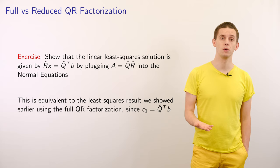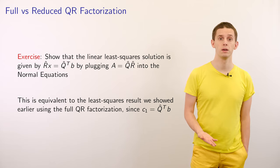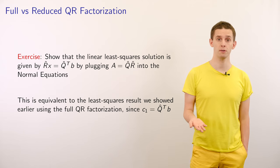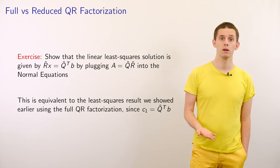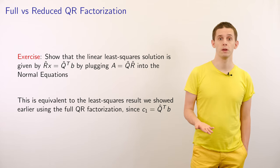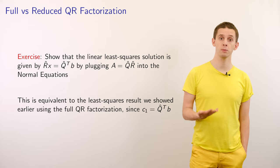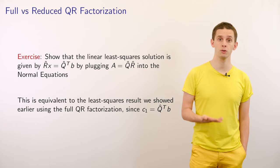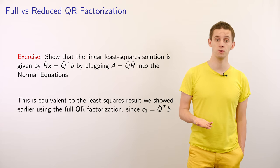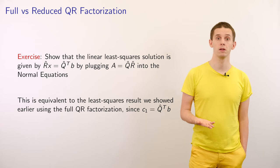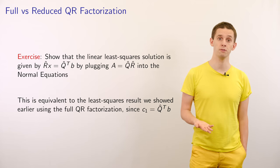In the previous video we looked at how the QR factorization is useful for solving linear least squares problems. Using the reduced QR factorization, we can show that if A equals Q̂R̂, then the solution to the least squares problem Ax = b can be expressed as R̂x = Q̂ᵀb. We'll now look at verifying this result.